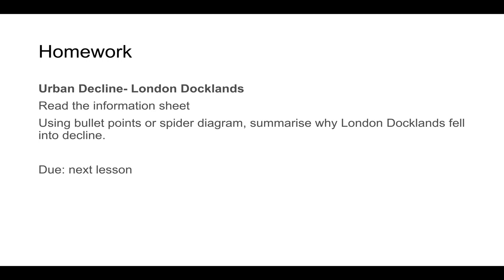Finally, please don't forget your homework. This time you need to read an article on the urban decline of London's Stocklands. Use bullet points to summarize why the Stocklands fell into decline, and find four photographs — two before and two after — of London's Stocklands, giving us a visual comparison of what it looked like before the decline and after. I will see you next lesson — have a great afternoon.